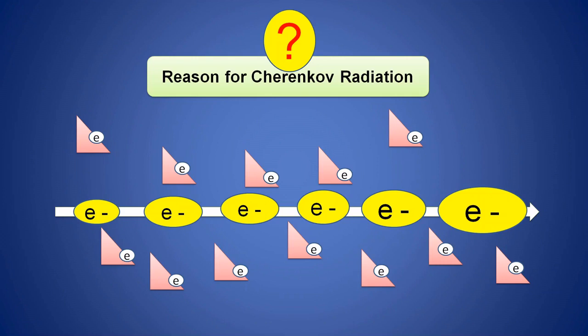Whenever Cherenkov radiation happens, the electron must travel faster than the light. That is why the electron moves first, followed by the blue light. This means the electron always moves faster than light — first the electron travels, followed by the appearance of blue color light. This is known as Cherenkov radiation.